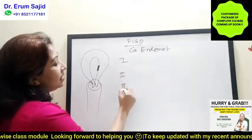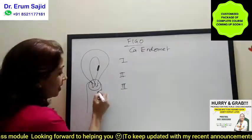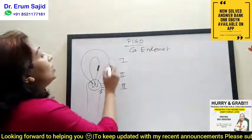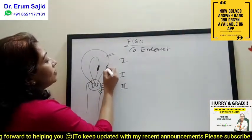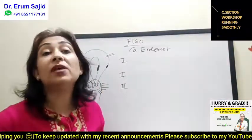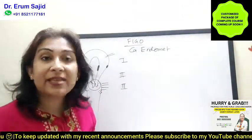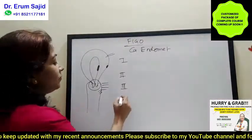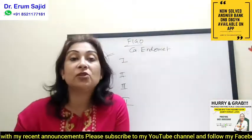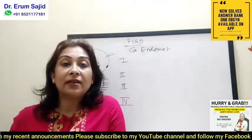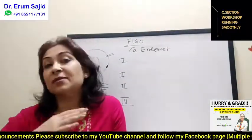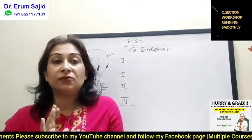Stage 3 involves spread to the vagina, the parametrium, the adnexa, and the serosal surface of the uterus. Stage 4, as with CA cervix, you don't have to memorize — it automatically comes: spread to the bladder and rectum is stage 4a, and stage 4b is distant metastasis. I am not going to detail stage 4 now.